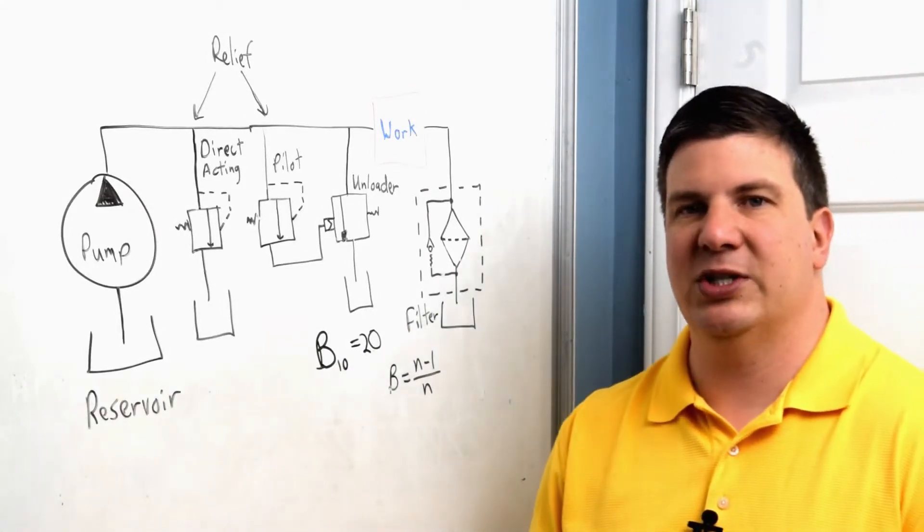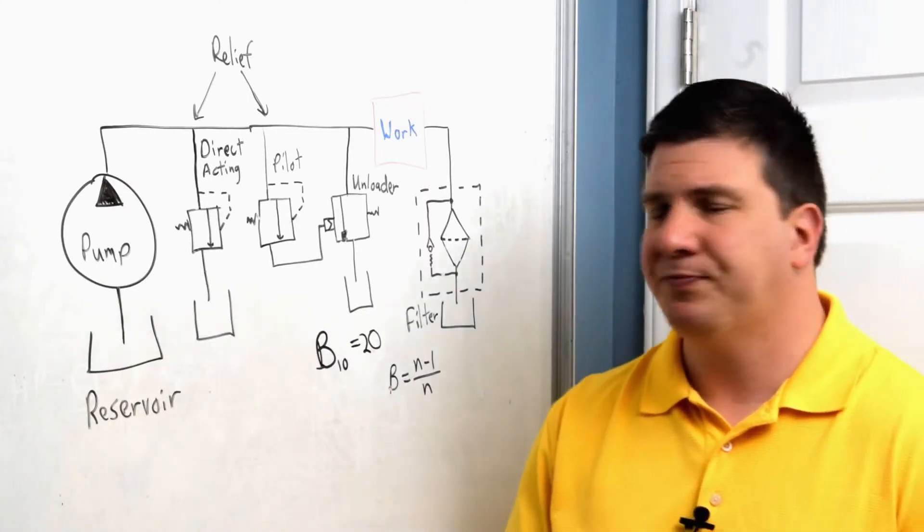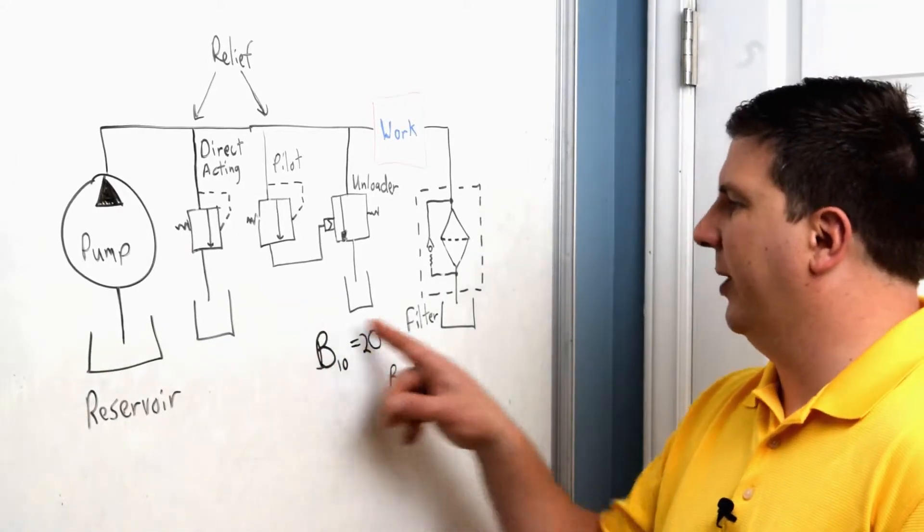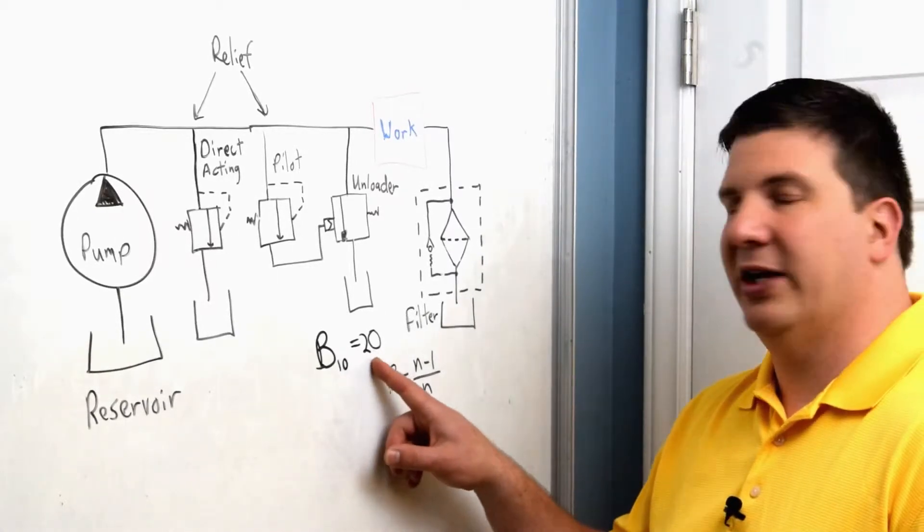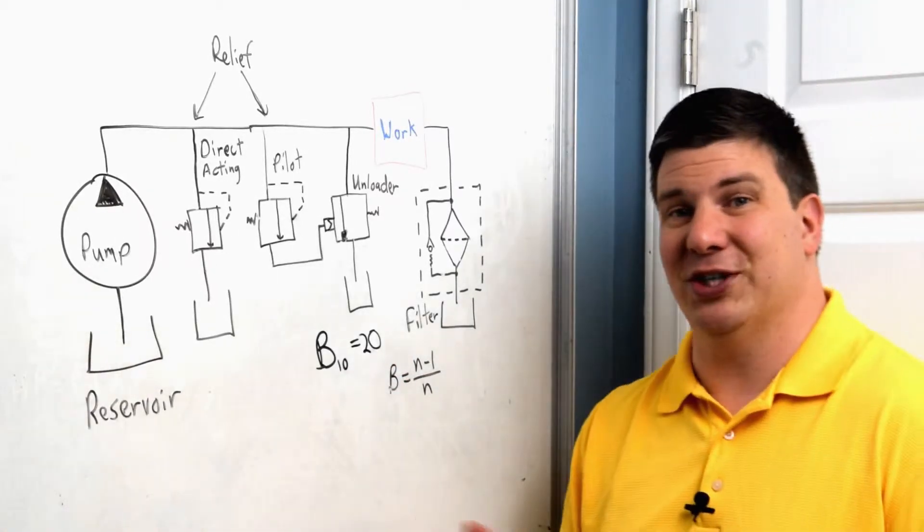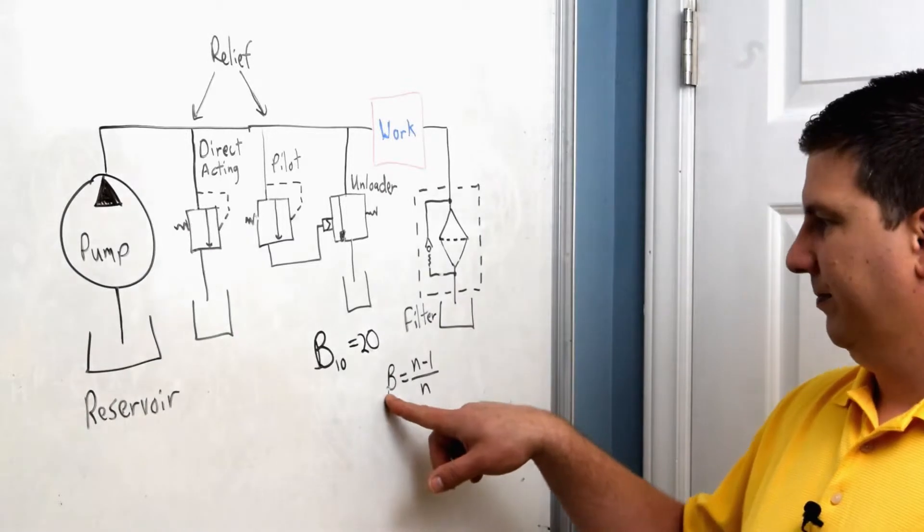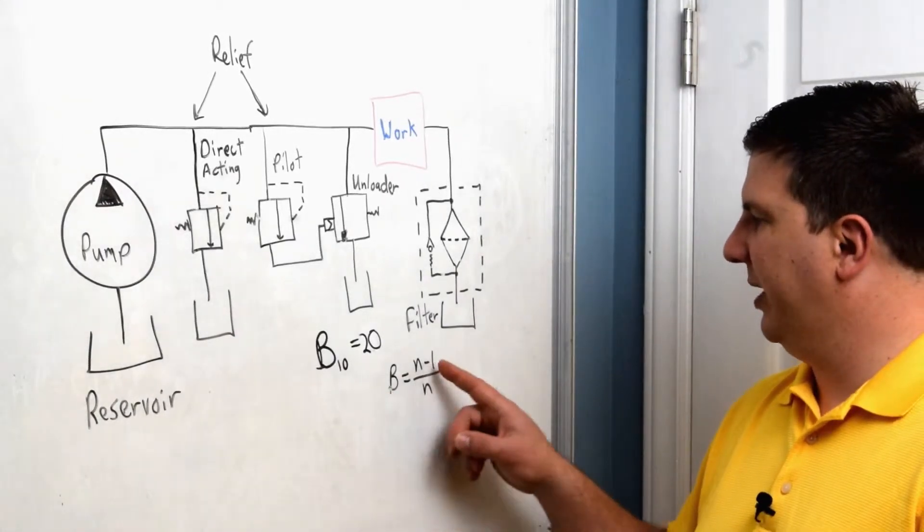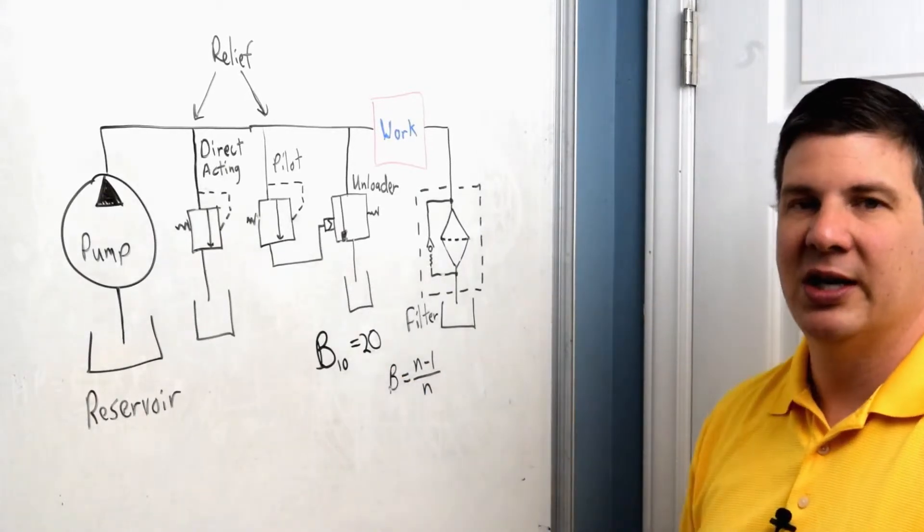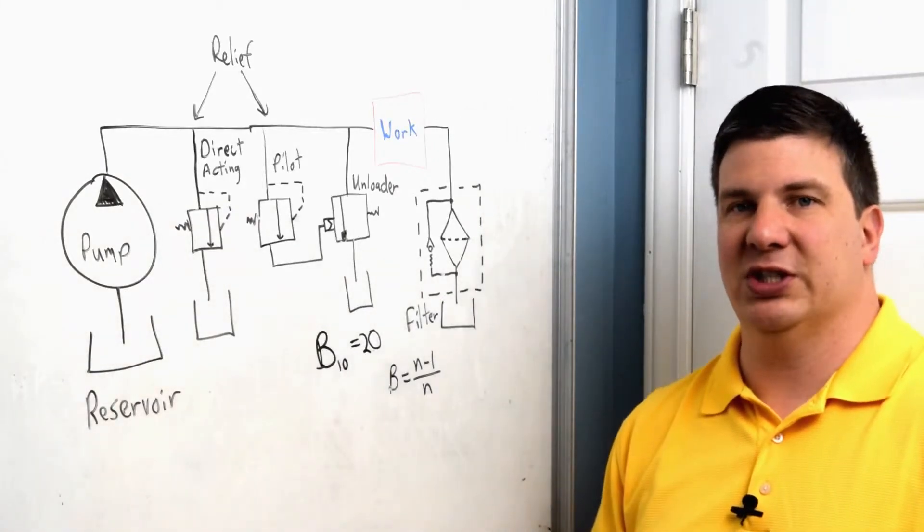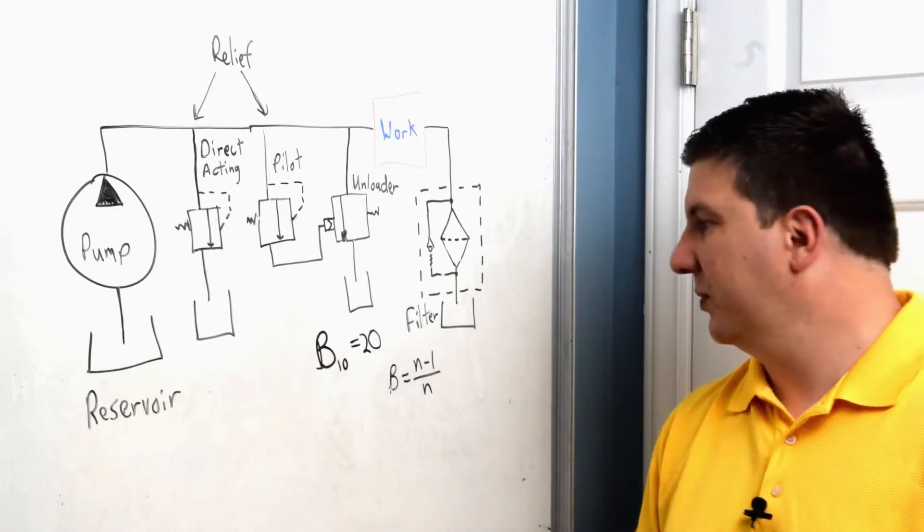And then the third piece of information that you will need is how efficient it is at filtering out that size. And that's displayed in this formula. So I have a beta value looking at 10 microns and I just put in 20 right here. I want to filter this, that's 20 efficient. And that's kind of a funny name and this is how they come to that number. My beta is equal to N minus one over N. In that case it's 20. So 20 minus one is 19 over 20. So it is 95 percent efficient. So it'll miss one particle out of every 20.